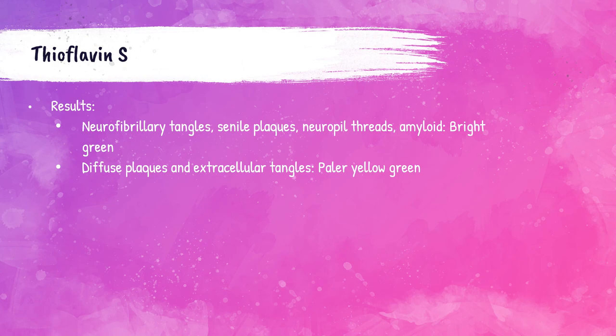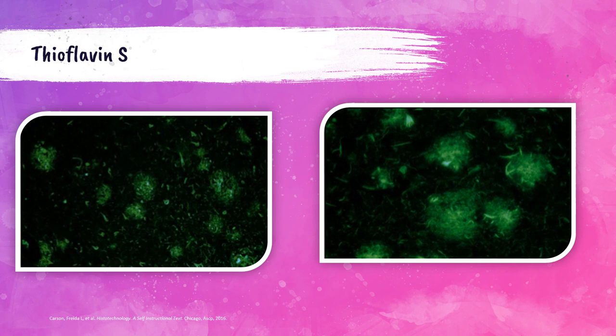Photos show brain tissue from an Alzheimer's patient stained with the Thioflavin S method, displaying senile plaques, neurofibrillary tangles, and amyloid. The second photo shows the same tissue at higher magnification.